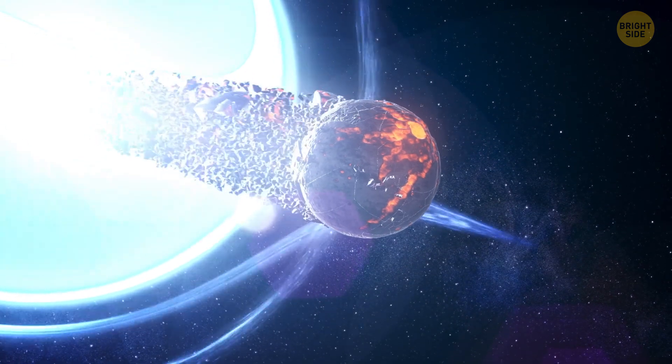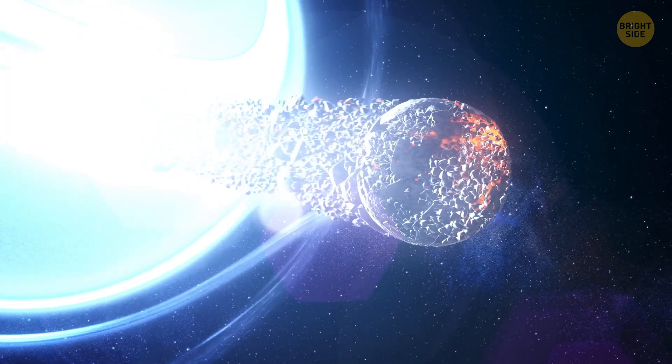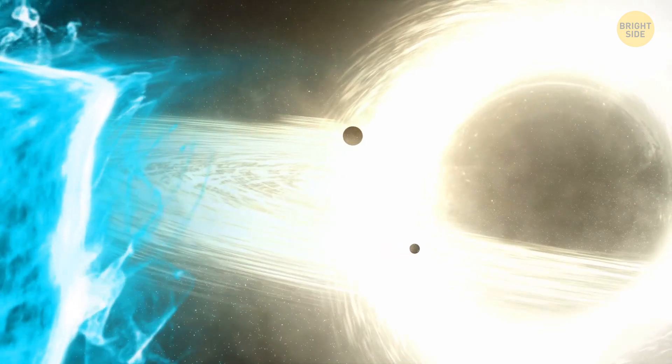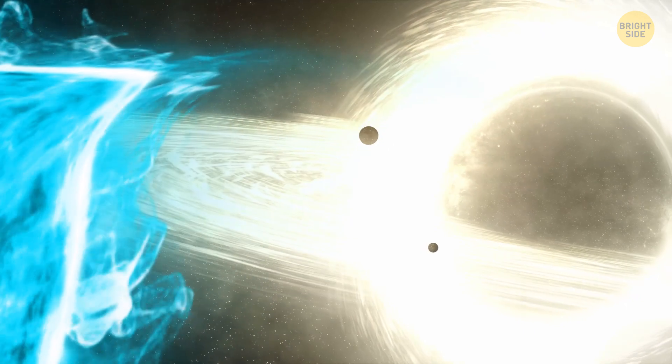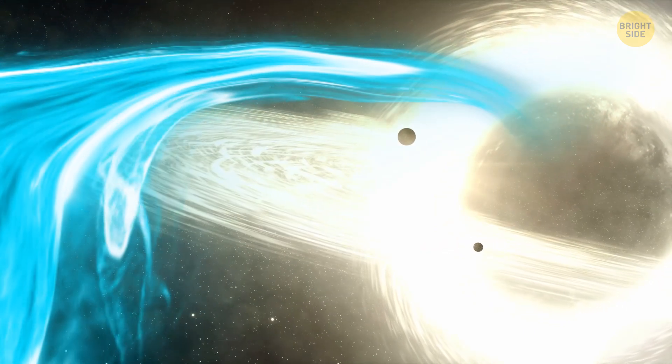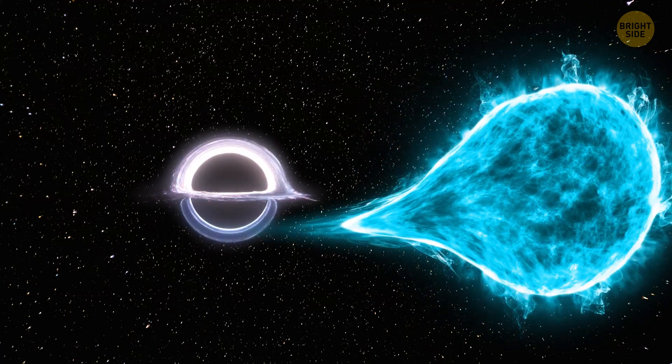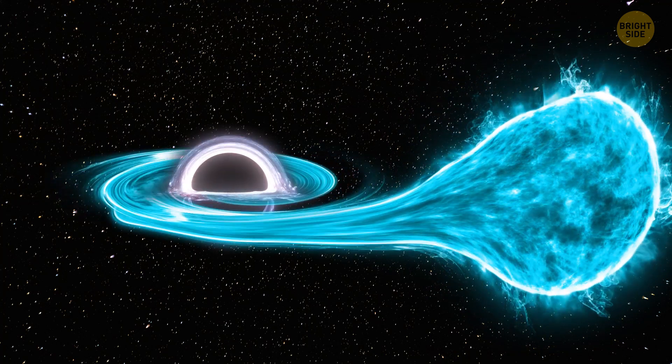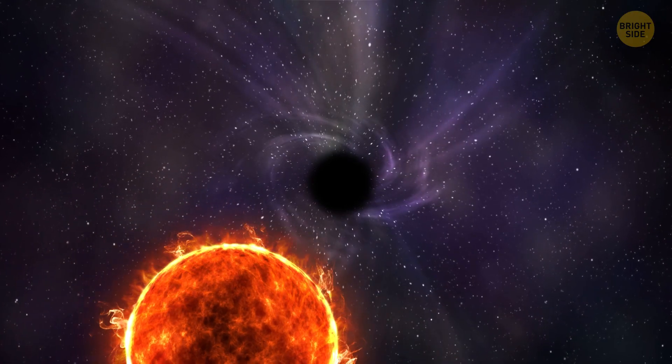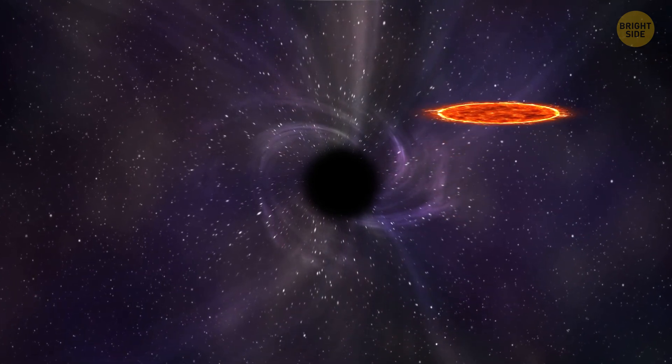Or something else can happen. Sometimes a regular star comes too close to a black hole and gets torn apart. A black hole is a super dense object with an incredibly strong gravitational pull that starts stretching the poor star out into a long and thin shape like spaghetti. You've probably guessed it. We call this spaghettification. As the pieces of the star are pulled in, they become hot and emit x-rays. A black hole can choose a different method too, squishing the star and making it flat like a pancake.